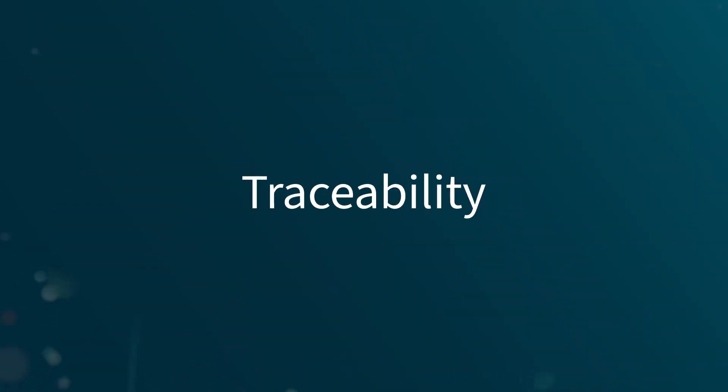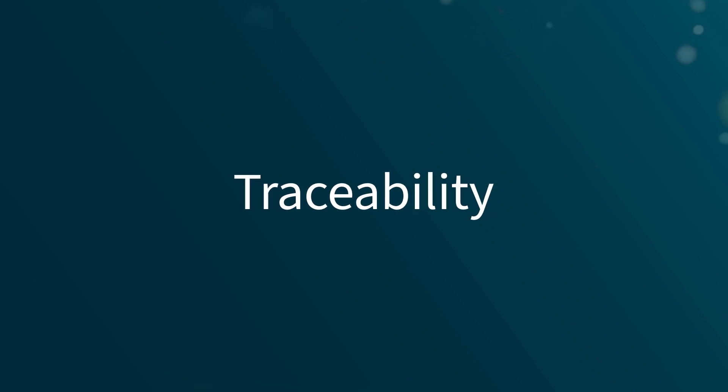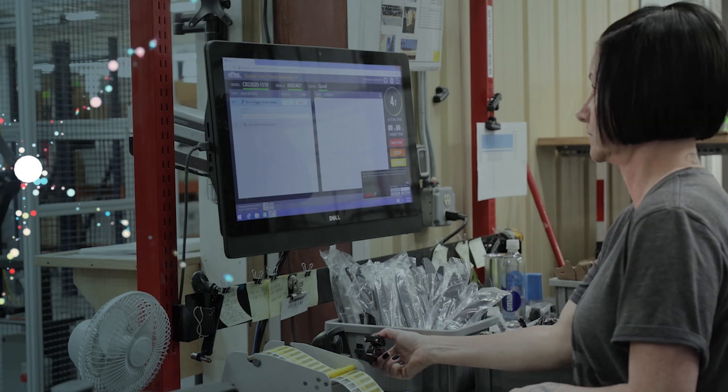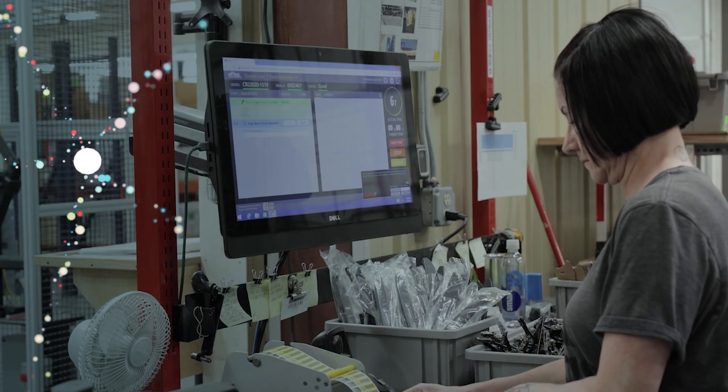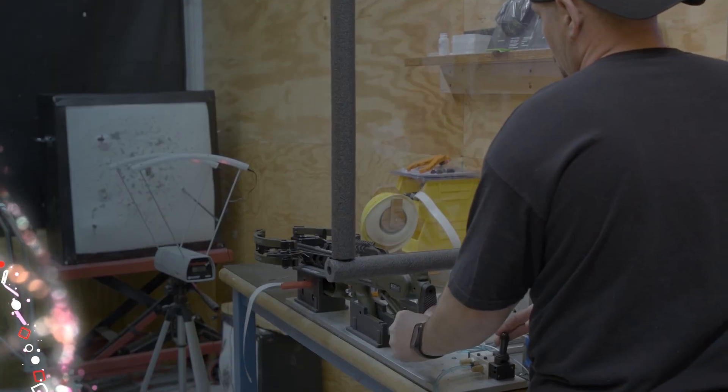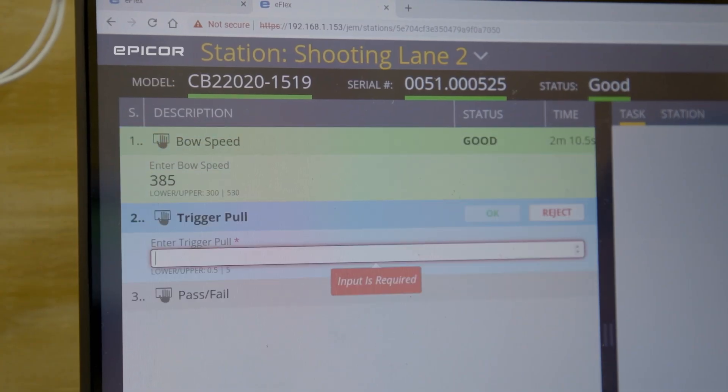Traceability is crucial for monitoring quality and reducing costly recalls. Connected Process Control easily tracks every component from inception to completion, providing detailed product genealogy for every build.